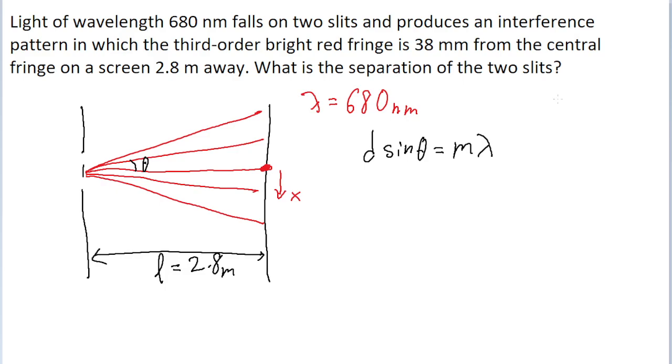Now we don't know anything about the angle, so we're going to apply the small angle approximation, which states that for very small angles, the sine of theta is approximately equal to the tangent of theta. And if we look at our diagram, we can see that the tangent of theta, which is the opposite side divided by the adjacent side length of the triangle, is going to be equal to x divided by L. So our formula can be rewritten as d multiplied by x divided by L equals m lambda.